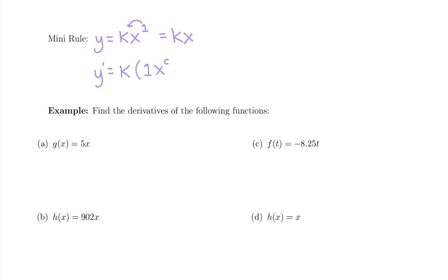1 minus 1 is 0. Anything to the 0 power — you could try it in your calculator: 50 to the 0, 9 to the 0, 85 to the 0 — anything to the 0 equals 1. So we really get k times 1, which is k. The derivative of kx is k.